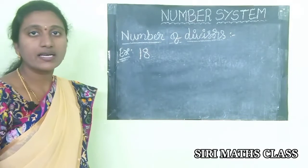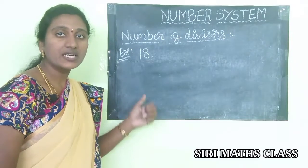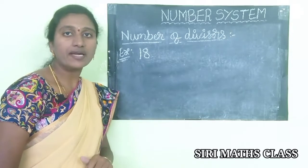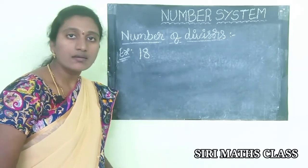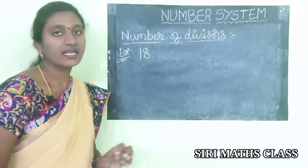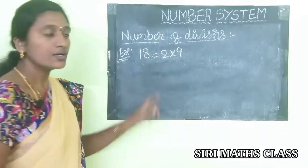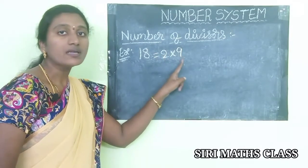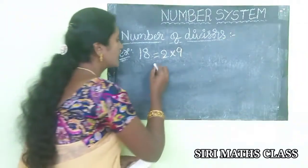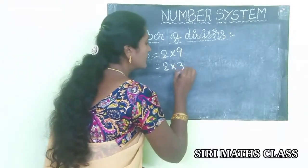Let us take the number 18. We need to find the standard form of a natural number where all bases are prime numbers, in the form p1^n1 × p2^n2. Since 18 is a composite number, convert it into prime factorization. Two nines are 18; two is a prime number, nine is composite.